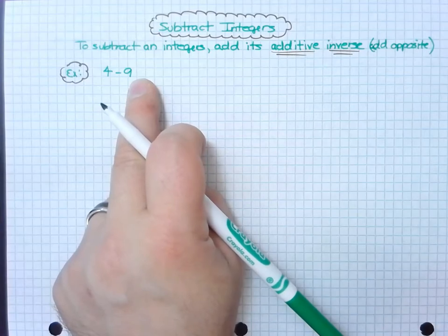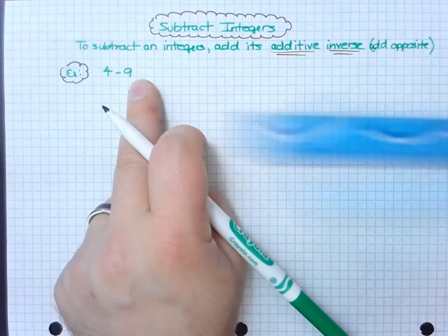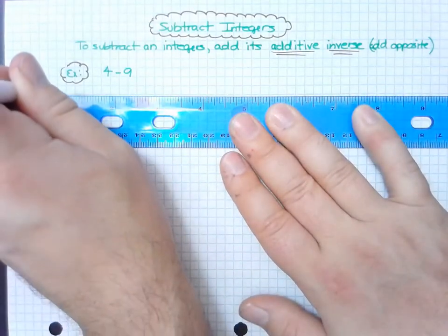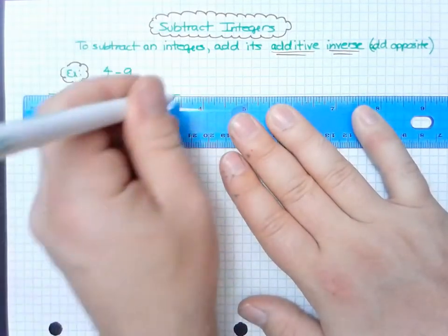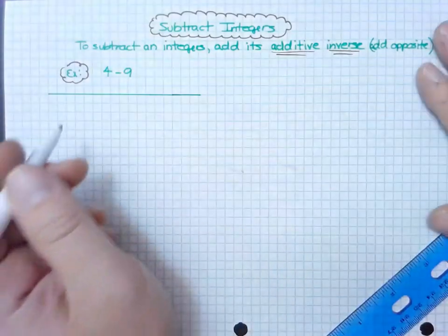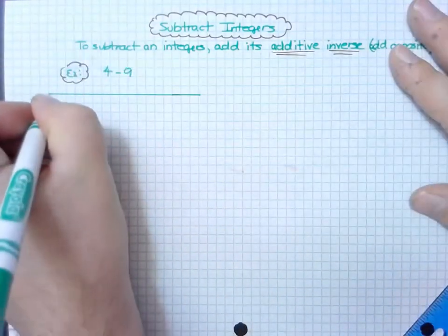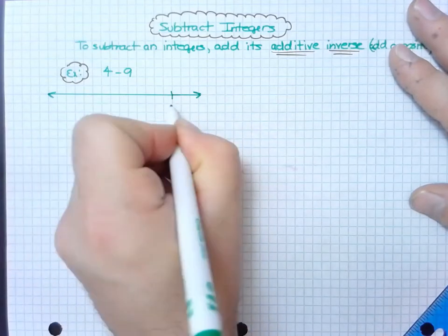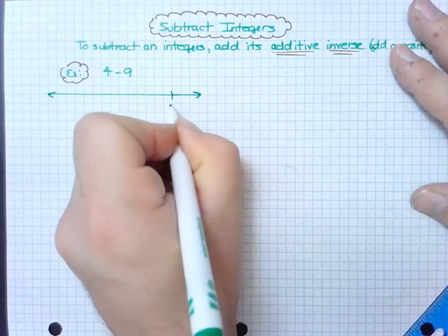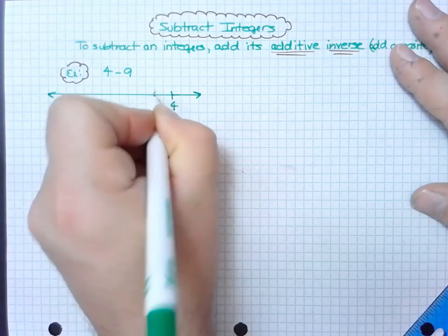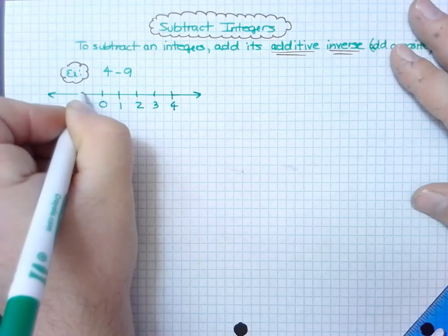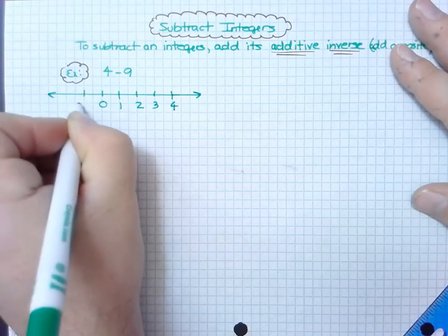But let's visualize and illustrate what that means. This time I'm going to put the four way over here because I know I'm going to have to get to zero and it's going to make it past zero. So I have 4, 3, 2, 1, 0, and let's just go to negative 1, negative 2, dot dot dot.